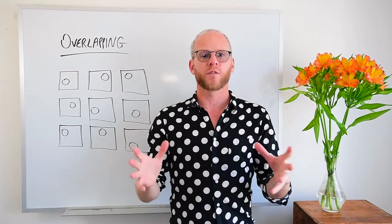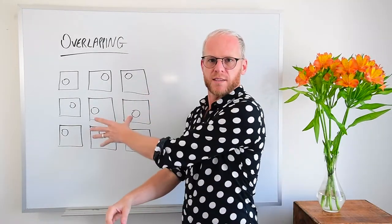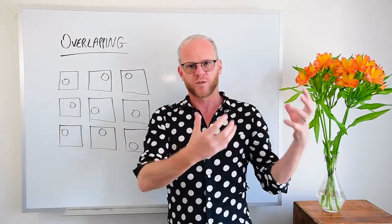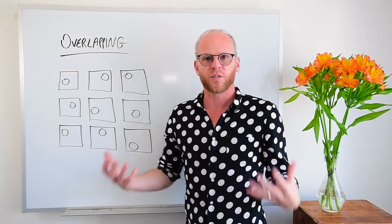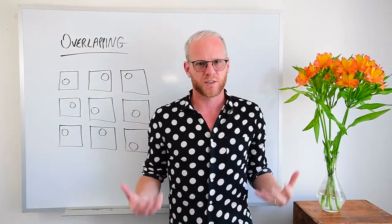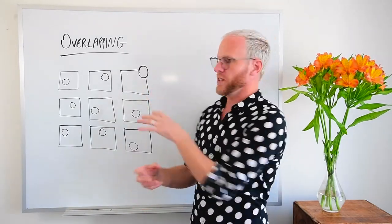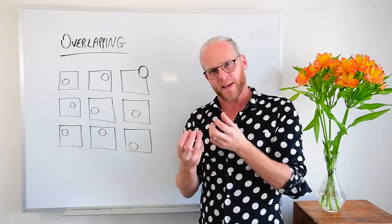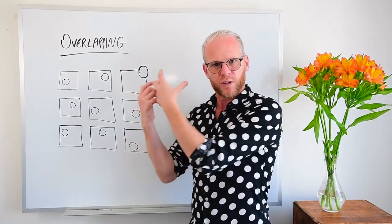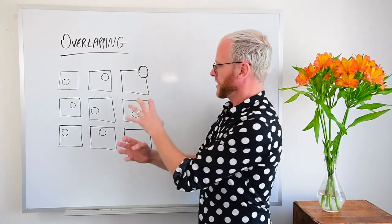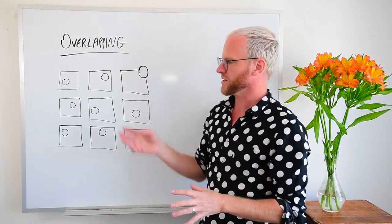The design principle of overlapping. Take a look at these squares — each one has a circle inside it. Which one draws your attention? Good chance none of them, because they're all the same apart from the location of the circle within the square. But if I redraw it so that the circle is breaking the plane of the square, overlapping it, now it draws your attention because it's created a completely different shape and it's different from the rest of them.